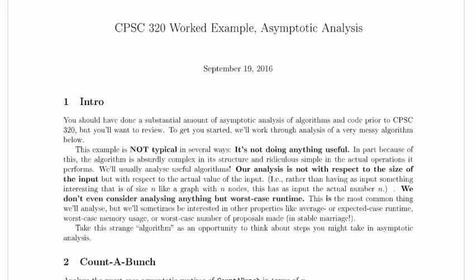We don't usually do that. Usually we'll take in a graph with n nodes, or an array with n elements, or a graph with n edges — maybe we're more concerned about the number of edges — or n descriptions of people's preferences, and so on and so forth. The input will have a size that's related to what we're interested in, rather than actually being the number that we're interested in.